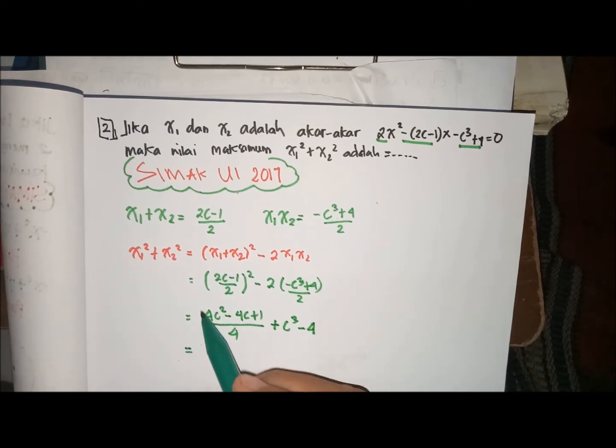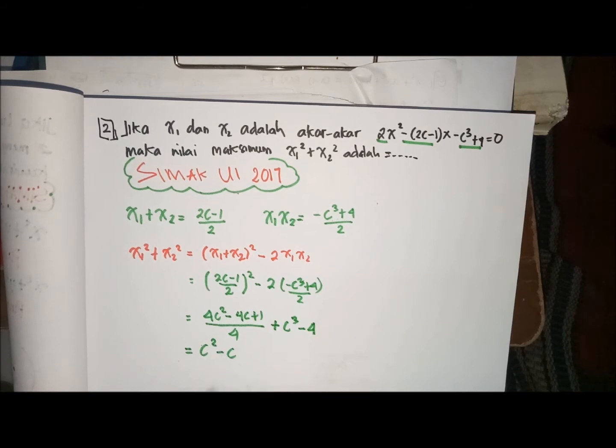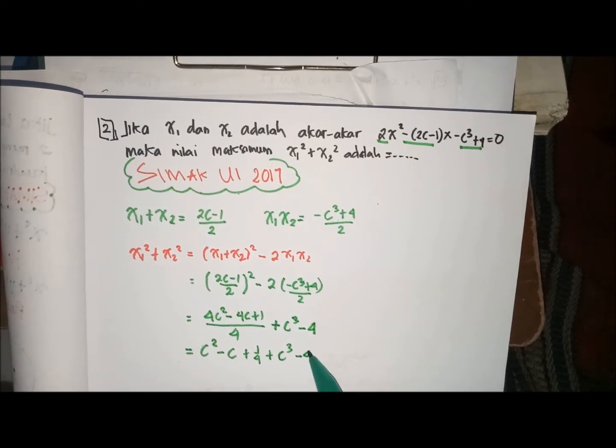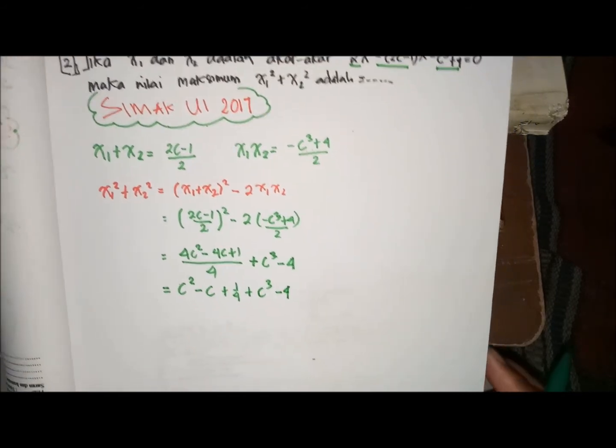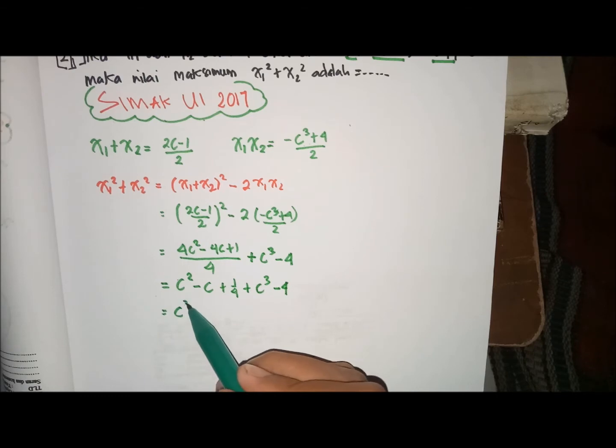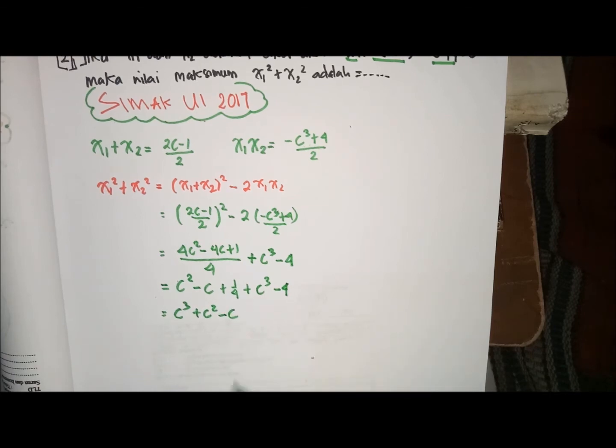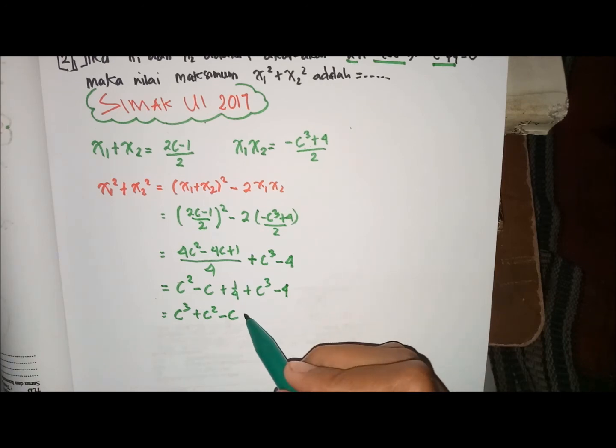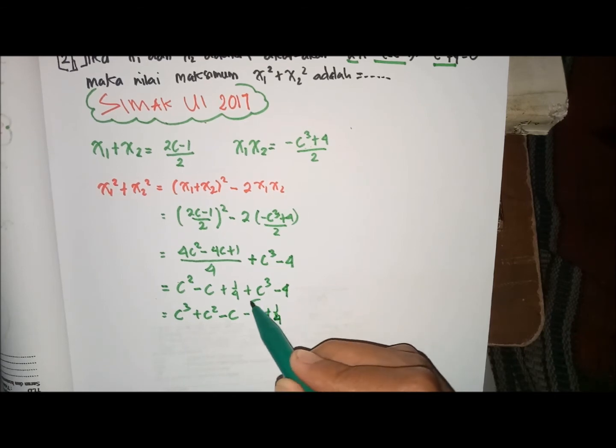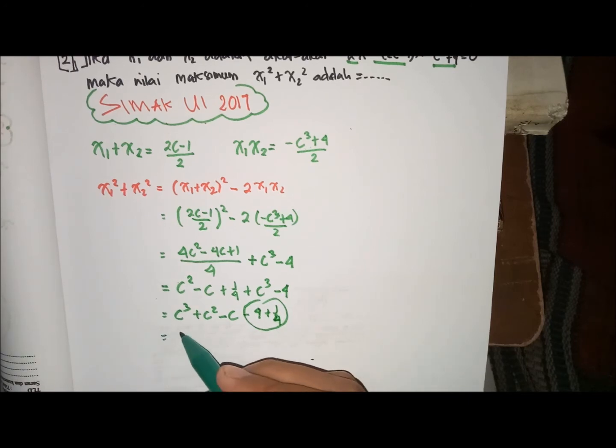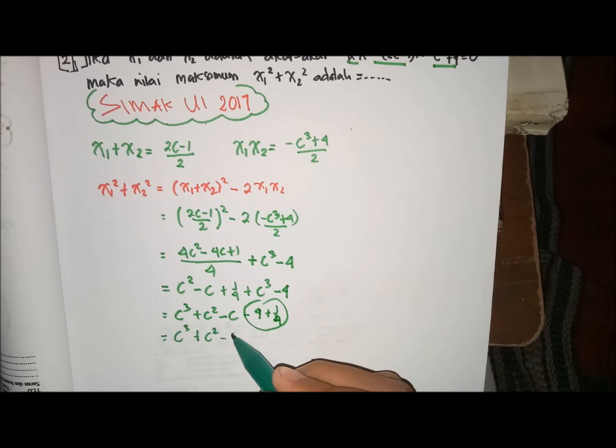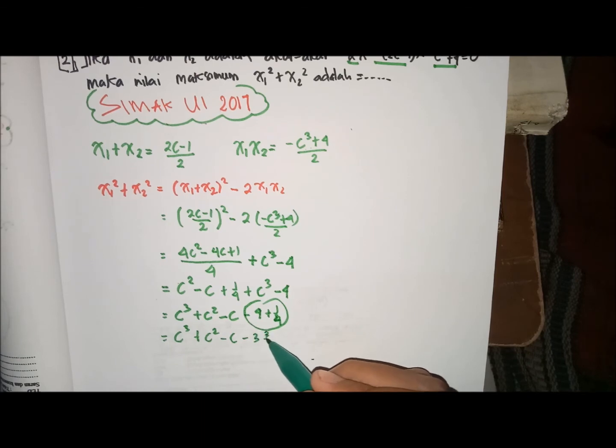Kemudian ini kita bagikan semua, berarti C bangka 2 min C plus 1 per 4 plus C bangka 3 min 4. Sehingga bisa kita dapatkan bahwa ini adalah C bangka 3 plus C kuadrat min C min 4 ditambah 1 per 4, sama aja dengan C bangka 3 plus C kuadrat min C min 3 3 per 4.